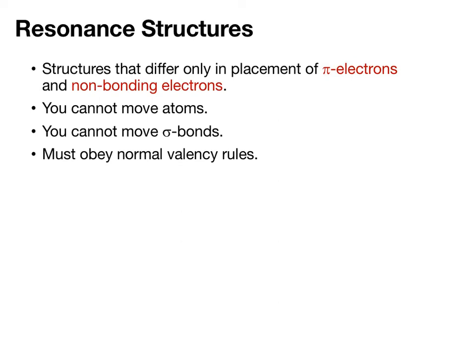There are very rigorous rules when writing out resonance structures. First, two or more resonance structures differ only in placement of pi-electrons and non-bonding electrons, or lone pair electrons. Non-bonding and lone pair are used interchangeably. You cannot move any atoms, you cannot move sigma bonds, and you must obey normal valency rules.